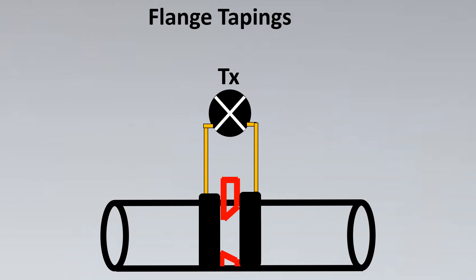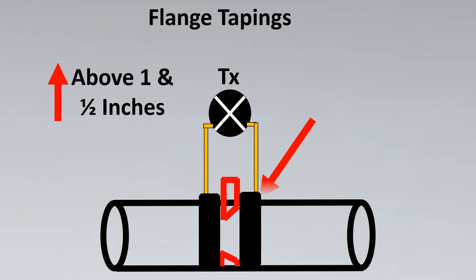Now let us look into the next case which is flange tappings. For flange tappings usually we go for line sizes which are above 1.5 inches. Now here this standard for using these flanges is ASME B16.36.